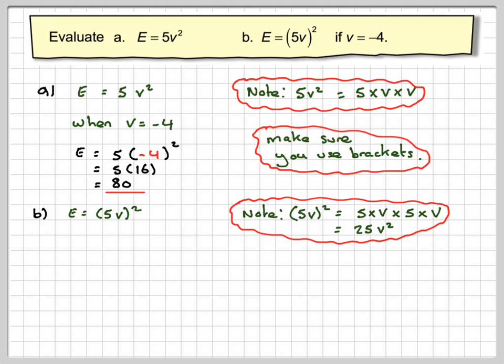So we can see that 5V squared and (5V) all squared are different things. This one is just 5V squared, and this is 25V squared.